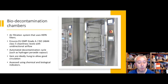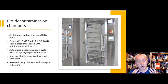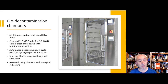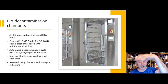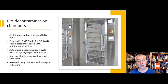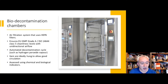Biodecontamination chambers have an air filtration system using HEPA filters. Such systems are recirculatory and designed to provide a Grade A air supply environment with unidirectional airflow. They're superior to manual disinfection because the biodecontamination process is automated. The effectiveness of hydrogen peroxide vapor depends on achieving the right concentration and even distribution inside the chamber. Ideally, items are hung to avoid occluded surfaces, and effectiveness is assessed using chemical and biological indicators.